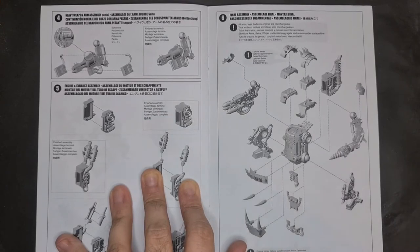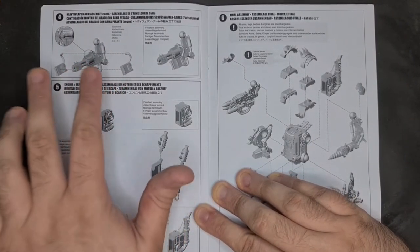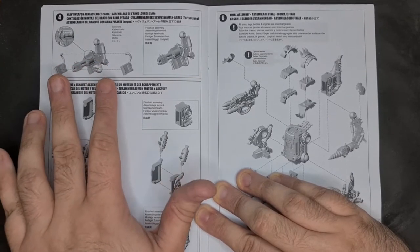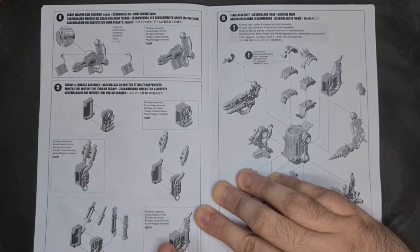Step four, again, heavy weapon arm assembly continued. So you get another option which is your skorcha. They obviously couldn't fit it all on one page. Quite simple again. You get these fuel canisters that go into it, and then you've got your finished assembly.